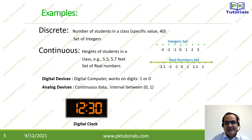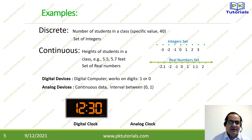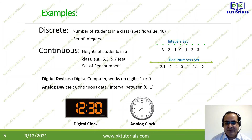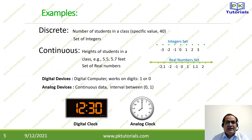For example, consider a digital clock — it is a digital device. Its timing goes from 12:30 to 31, then 32, 33, up to 60. It will not go to 30.1 or 30.2, so it is a discrete value — that is why we call it a digital clock. For continuous, consider an analog clock: we can see the needle starting from 12 and moving to 1, 2, 3, covering the distance between 12 and 1, between 1 and 2, and so on. It does not jump directly from one digit to the next — it slowly moves, creating continuous data.